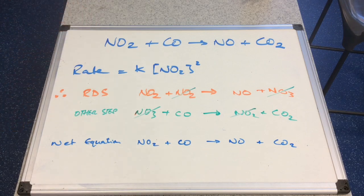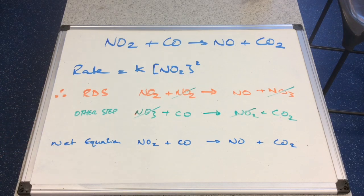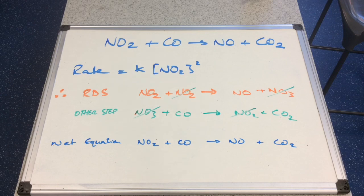A valid mechanism satisfies two conditions: the rate determining step is consistent with the rate equation, and the two steps combine to give the net equation. The reason students find this topic awkward is the guesswork involved in coming up with possible products for the steps — it's not an exact science. There's more than one valid way to write the mechanism, and the examiner will credit you provided your mechanism satisfies both conditions.